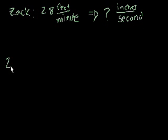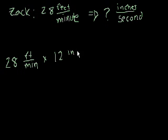So let's say if I had 28, and I'll write ft short for feet, feet per minute, and I'll write min short for minutes. So 28 feet per minute. Let's first figure out how many inches per minute that is. Well, we know that there are 12 inches per foot, right? So 12 times 28.